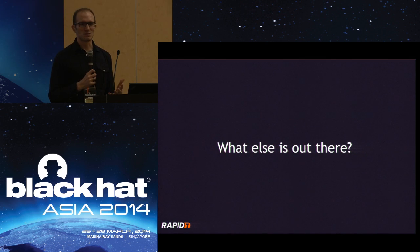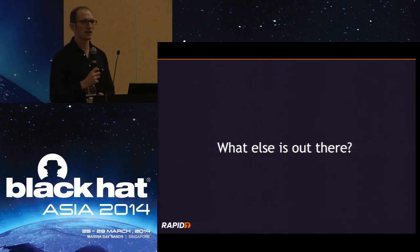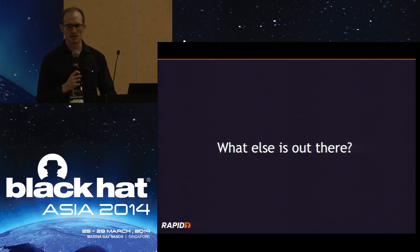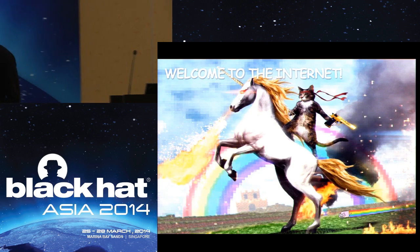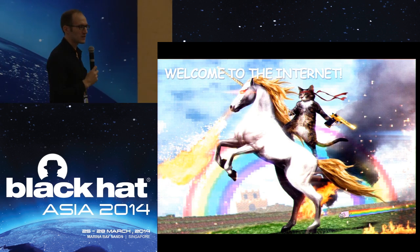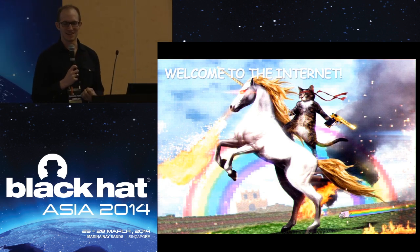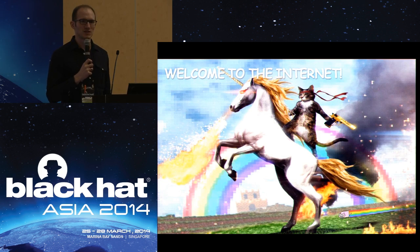Now it gets interesting because at that time we thought, okay, what else can we find? What kind of weird devices or misconfigurations or problems can we find on the internet if we look at an internet-wide dataset? Which brings me to this picture selected by a colleague of mine, Claudio — it really accurately represents the landscape of devices and things you find out there, because the internet is a weird place.